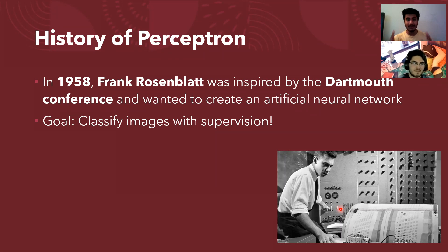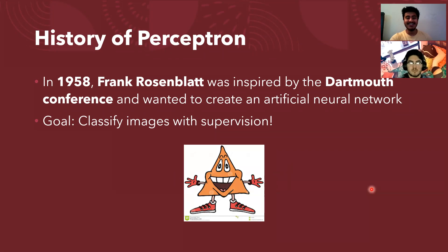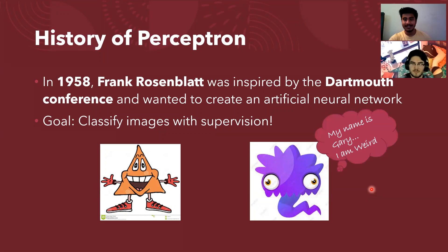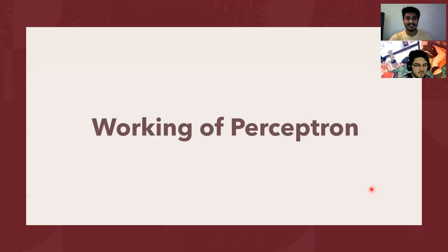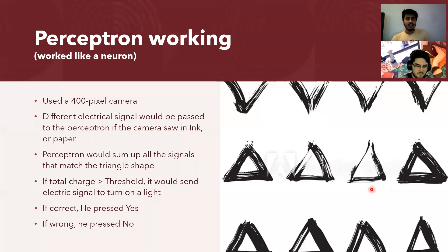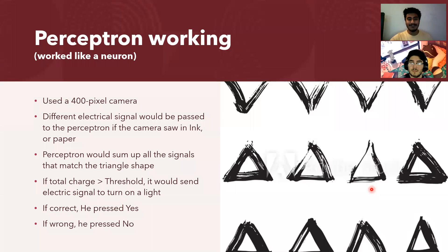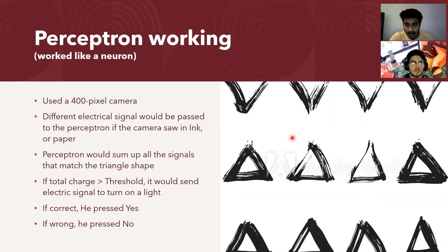Frank Rosenblatt's goal was to classify images with supervision — supervised learning. Specifically, he wanted to classify triangles versus shapes that are not triangles. He used a 400-pixel camera, which is remarkable given how far we've come. The camera sent different electrical signals depending on whether a pixel had ink (dark) or paper (white). These electrical signals were then given to the perceptron, which summed them up and compared the total against a threshold — if above the threshold, it would signal 'triangle.'